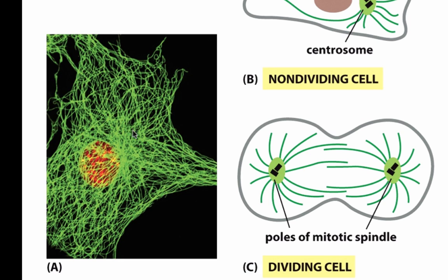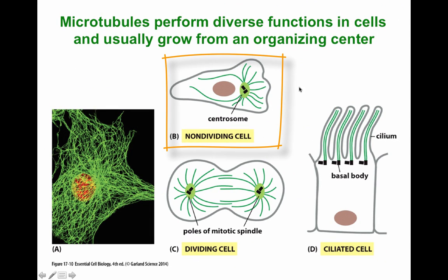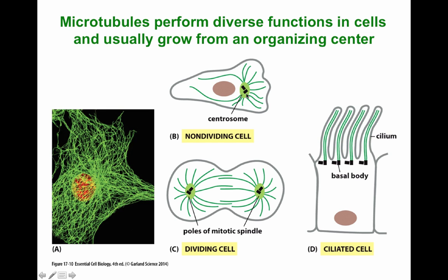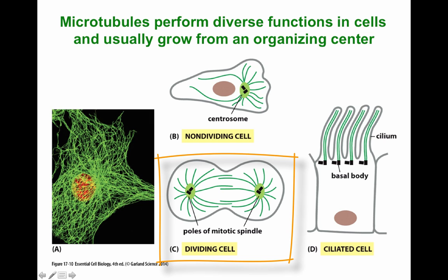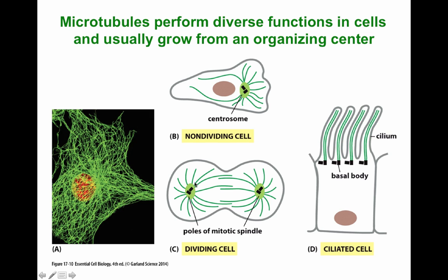Microtubules perform many different functions in eukaryotic mammalian cells, and they organize themselves from a particular organizing center. In part B of the figure, we have a microtubule organizing center called the centrosome. The centrosome contains gamma tubulin, which allows for the polymerization of the microtubules as they extend from the organizing center and radiate around the cell. Microtubules can also be used during cell division — the microtubule organizing center will become what we call the mitotic spindle, which segregates as the cell divides. From there, microtubules radiate and encounter the cell at the axis of cell division to help separate chromosomes.